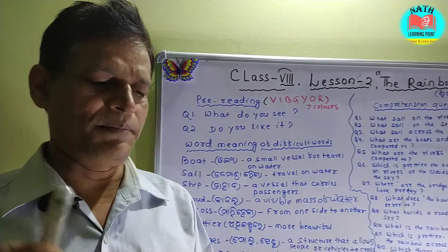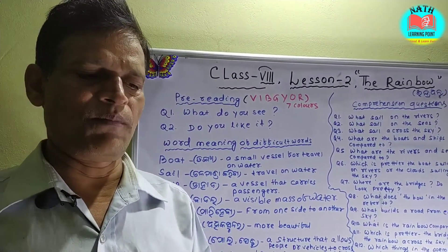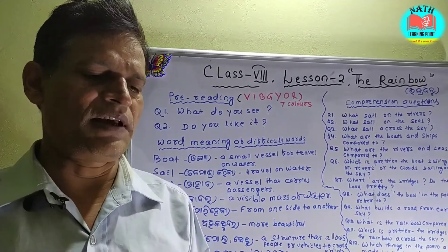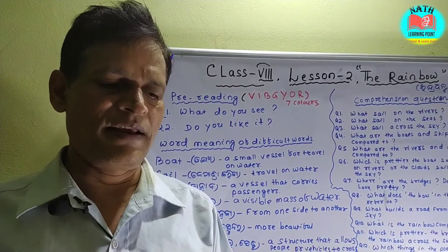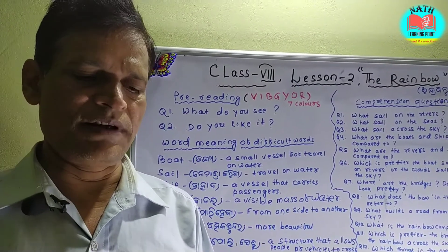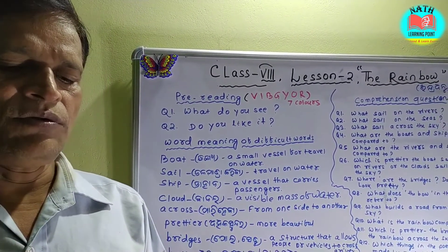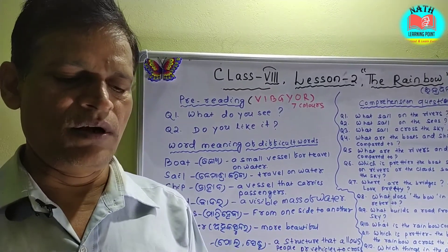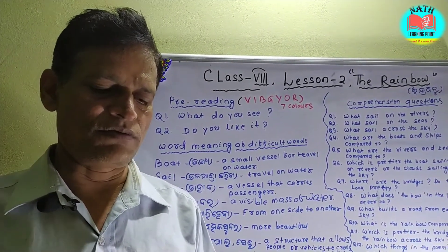Boats sail on the rivers and ships sail on the seas, but clouds that sail across the sky are prettier far than these. There are bridges on the rivers as pretty as you please, but the bow that bridges heaven over the tops of trees and builds a road from earth to sky.